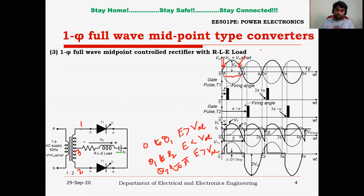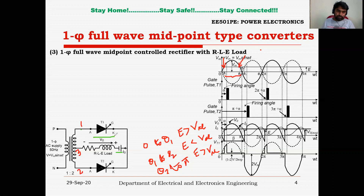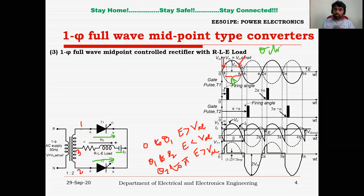During this interval, even if you fire the thyristor, the thyristor won't go to conduction state, because these thyristors carry current only from source to load — they are unidirectional devices. So make sure that alpha, which is the firing angle given to T1 as well as T2, should be more than theta 1 and less than theta 2. Your firing angle has to vary from theta 1 to theta 2.